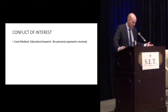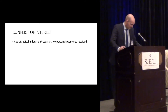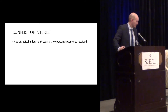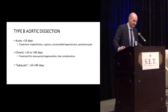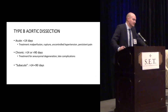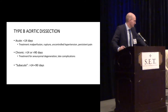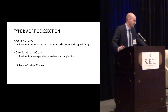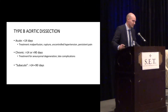First we have to categorize what is aortic dissection. We say that acute is less than 14 days. Chronic — some people say greater than 14 days or 90 days — but there is this group of sub-acute that is 14 to 90 days.